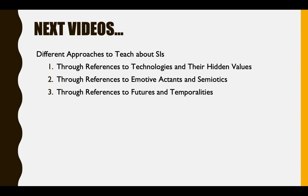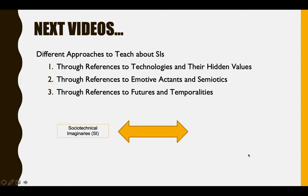Subsequent videos are intended for students to teach them about socio-technical imaginaries through specific examples and case studies. Each of the three videos will teach students through a different focus: first, to critically examine technologies and their hidden values; second, to consider how emotions attach us to particular socio-technical imaginaries; and third, to use future thinking to question taken-for-granted socio-technical imaginaries. In those videos, we invite students to substitute the term 'socio-technical imaginaries' with easier, more accessible terms such as 'desirable visions' or 'future values.' As a teacher, you may decide on yet another substitution that might work for your students.